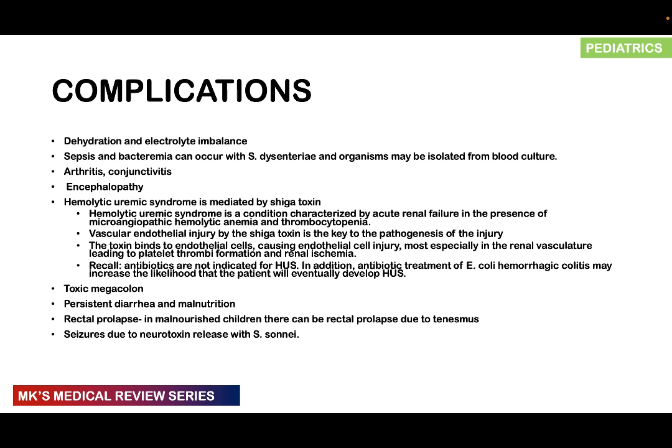Complications include dehydration, electrolyte imbalance, sepsis, and bacteremia — often seen with Shigella dysenteriae, where organisms may be isolated on blood culture. Patients may also develop arthritis, conjunctivitis, encephalopathy, and hemolytic uremic syndrome (HUS), which is often mediated by Shiga toxin. HUS is characterized by acute renal failure in the presence of microangiopathic hemolytic anemia and thrombocytopenia.